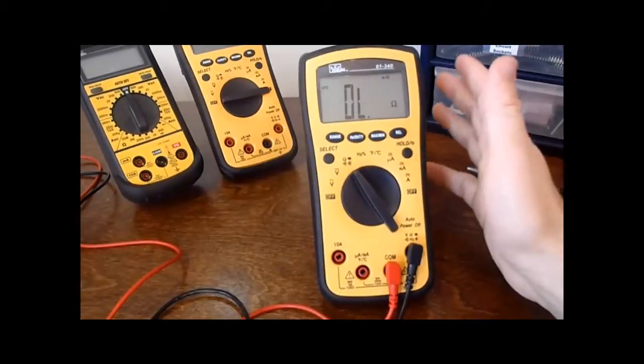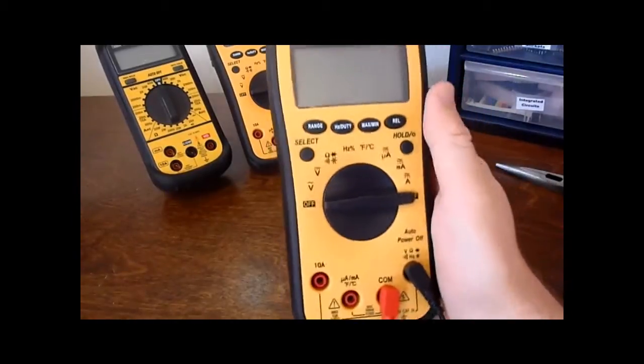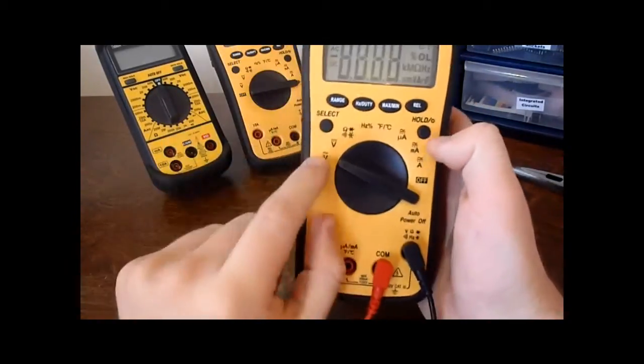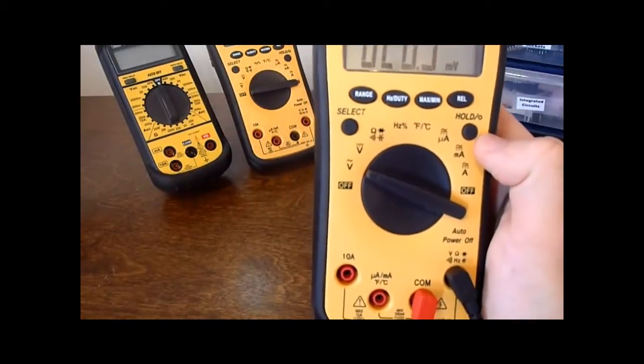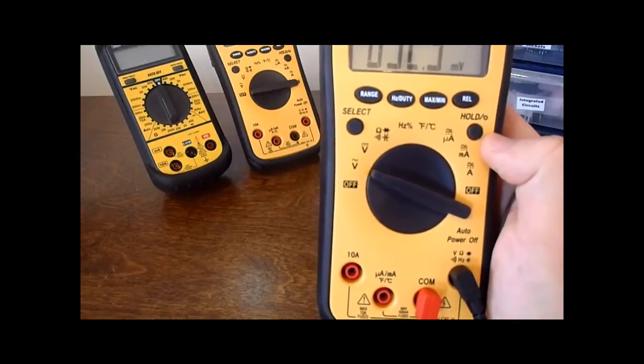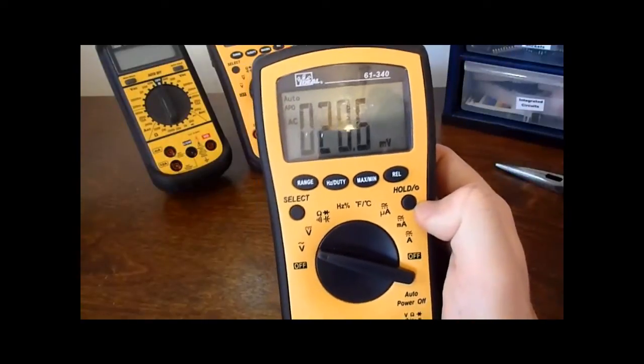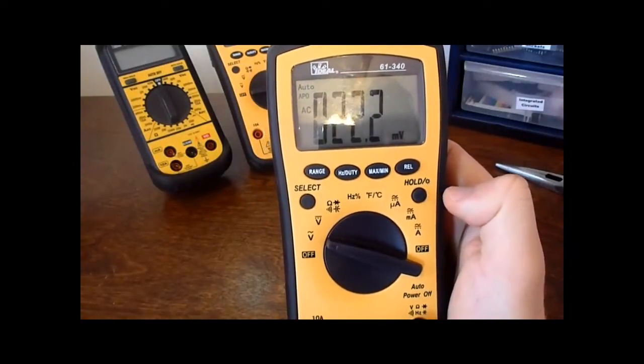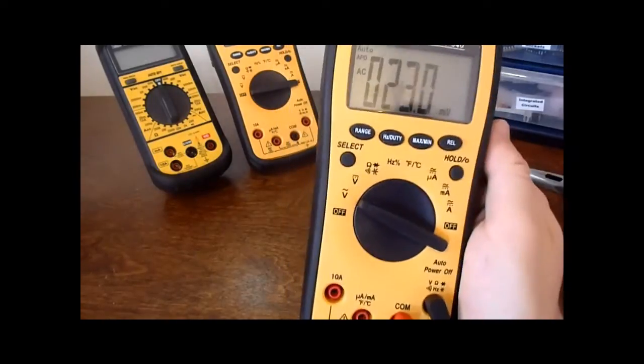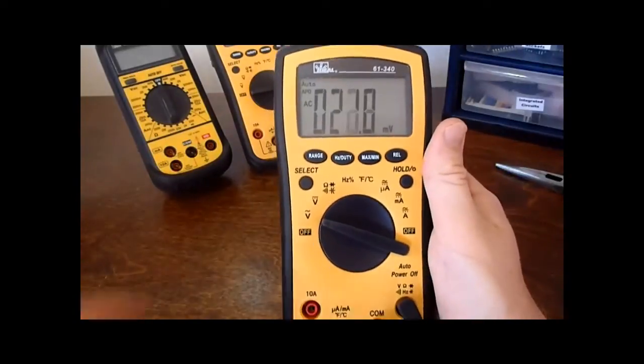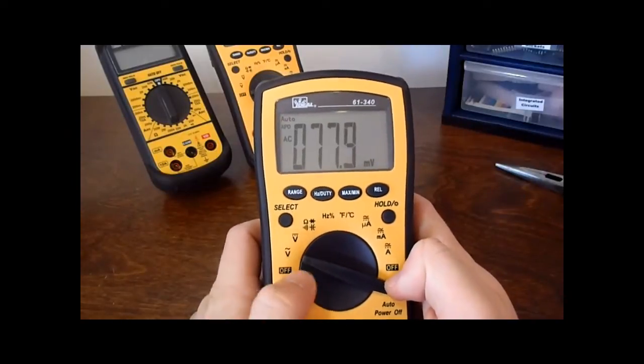That's enough about the physical characteristics. Let's go into the actual measurement abilities. The first setting is AC voltage, which is not true RMS, which is really annoying. The upgraded model, the 61-342, is about $15 more and has the ability to be true RMS. The quoted accuracy of this is 1.5% for AC voltage, which isn't that bad.